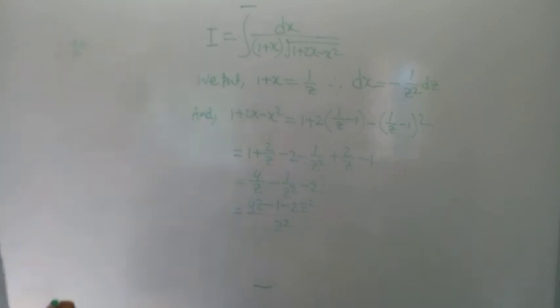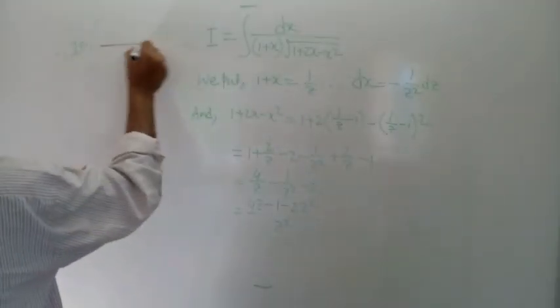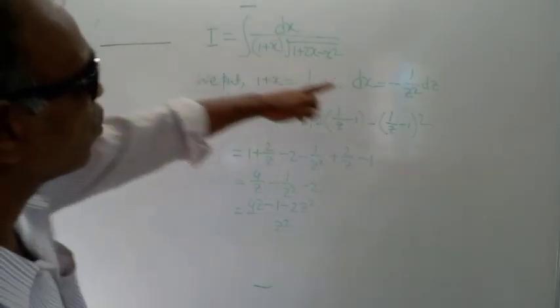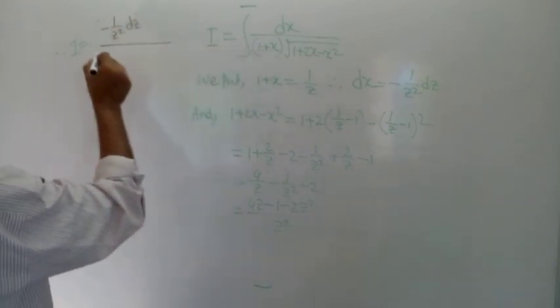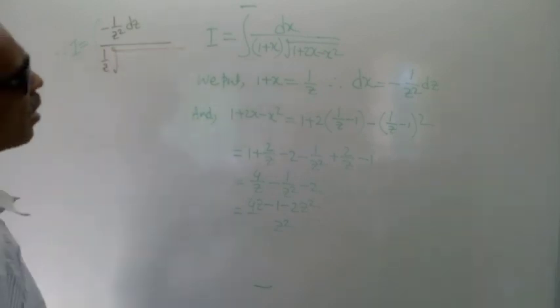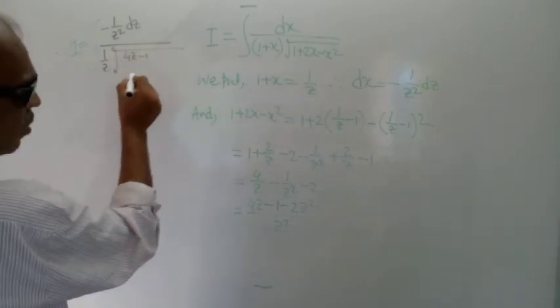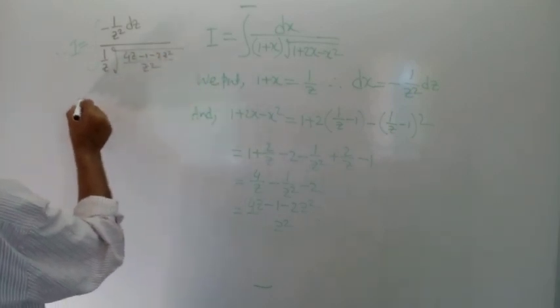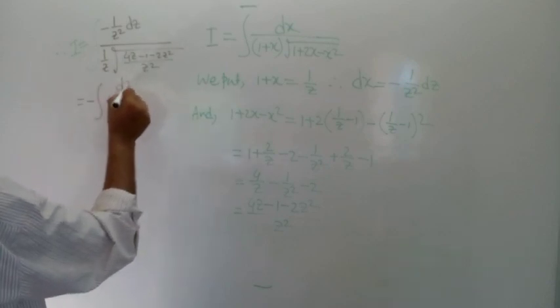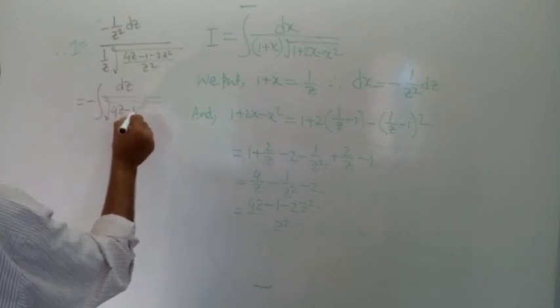Therefore the given integration I is equal to the integration of dx, which is minus 1 by z squared dz, divided by (1 plus x), which is 1 by z, times the square root of (4z minus 1 minus 2z squared) divided by z squared. This simplifies to minus the integration of dz divided by the square root of (4z minus 1 minus 2z squared).